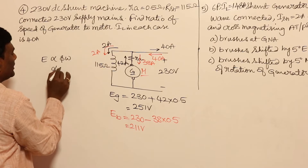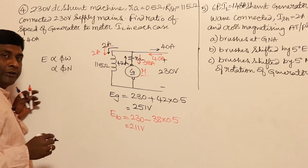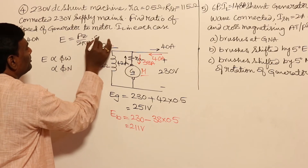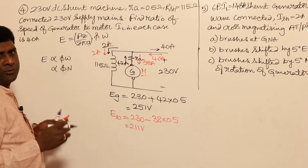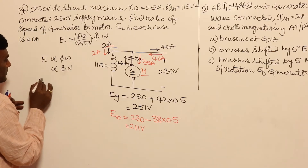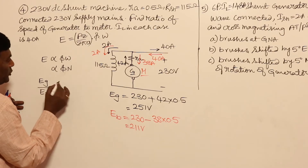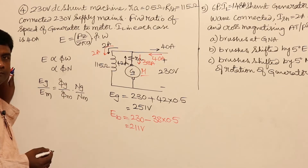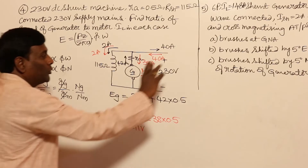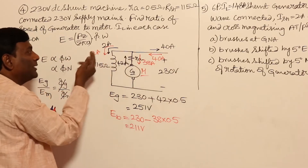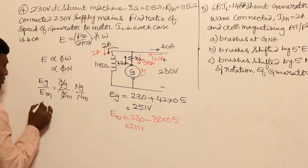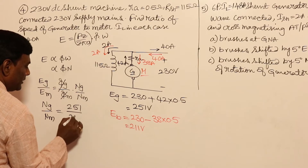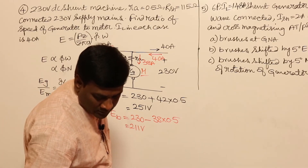Now E is directly proportional to phi times omega, or phi times N. So EG by EM equals phi_G by phi_M times NG by NM. Since the voltage across the field winding is the same in both cases, phi_G and phi_M are equal. Therefore NG by NM equals EG by EM equals 251 divided by 211, which equals 1.18.